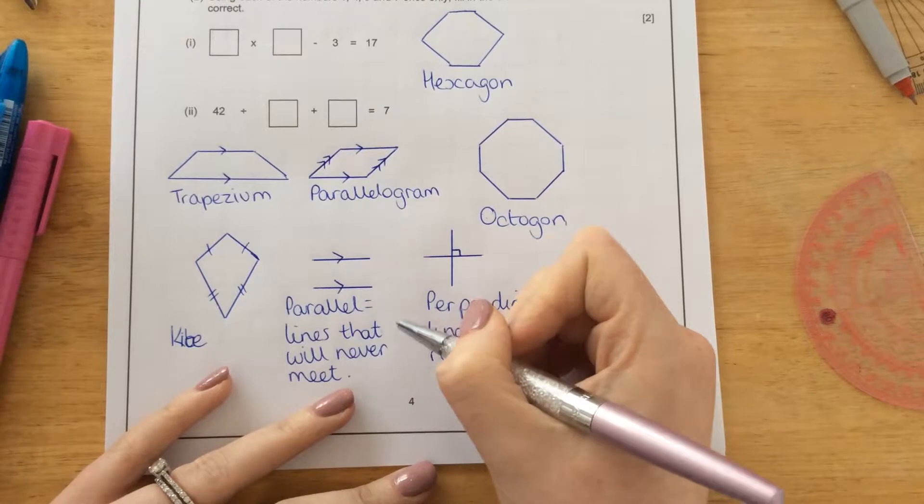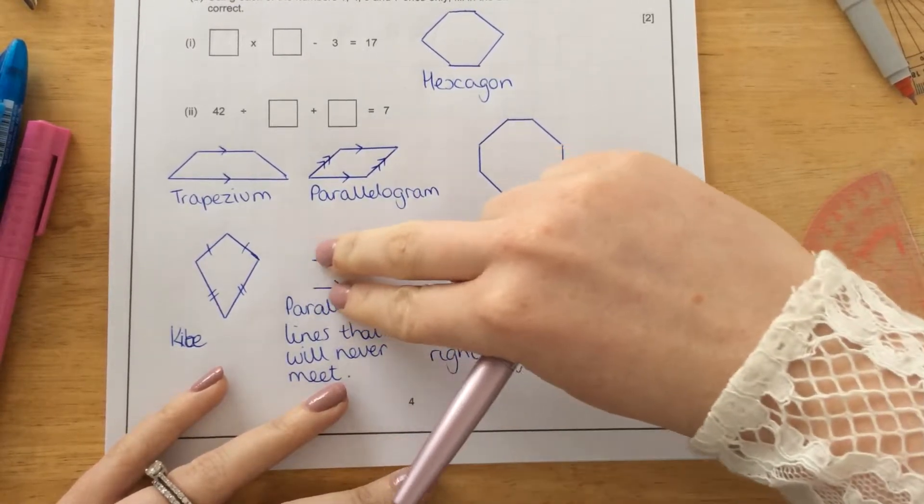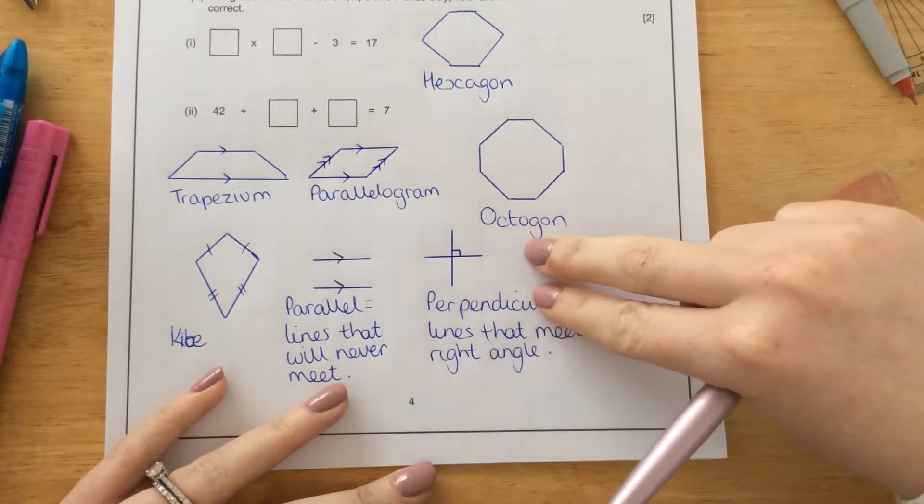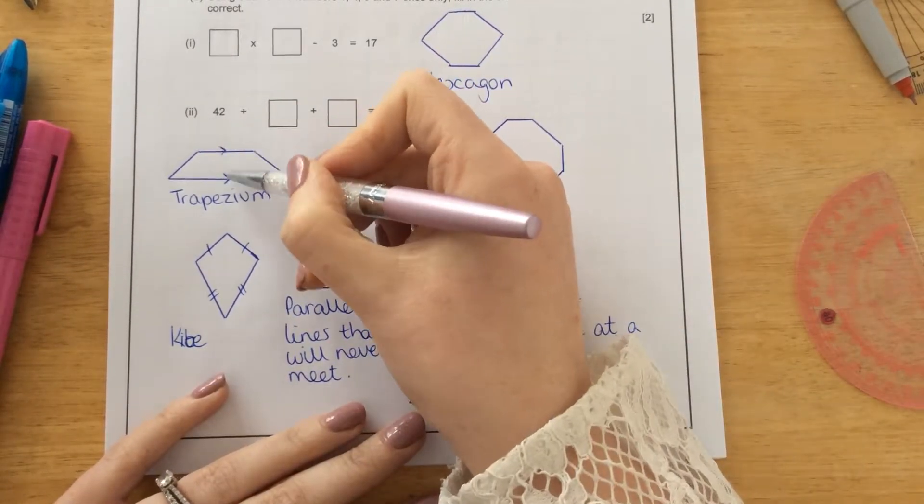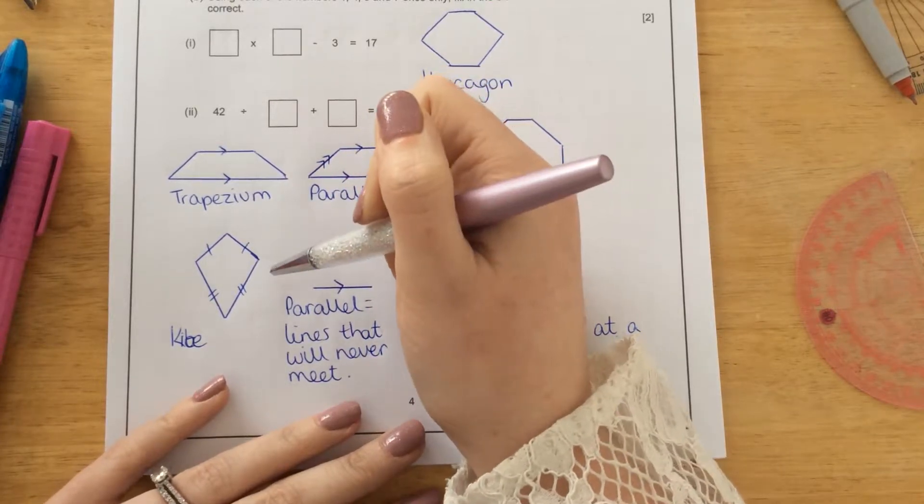Parallel means that two lines will never ever meet. So you can keep drawing these lines as far as you can and they will never cross over or touch. So this is one pair of parallel lines.